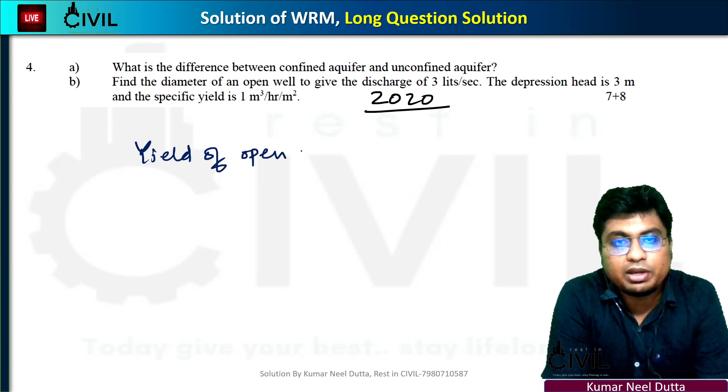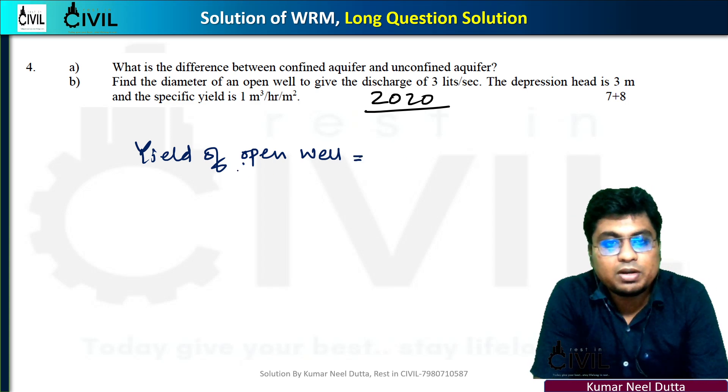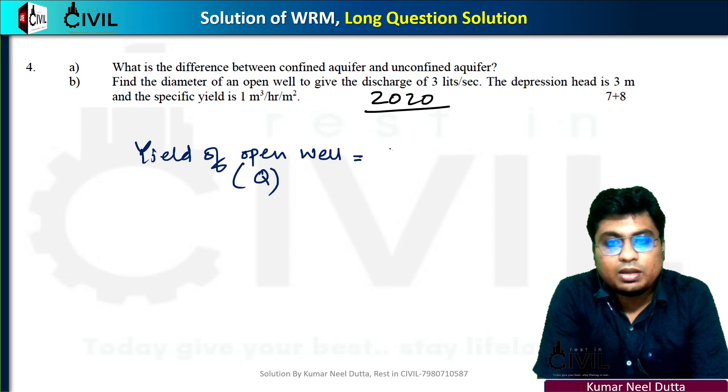For yield of open well, Q equals K times H.